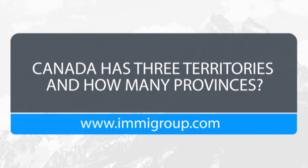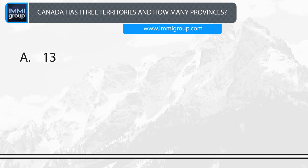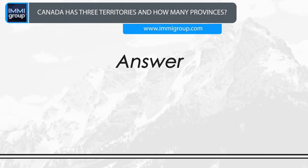Canada has three territories. How many provinces? A. Thirteen. B. Ten. C. Three. D. Five. Answer: Ten.